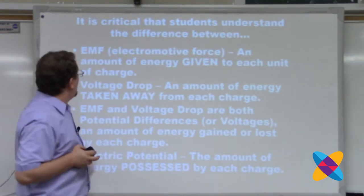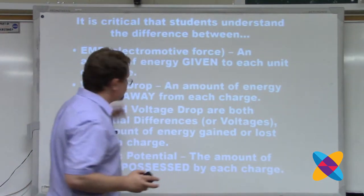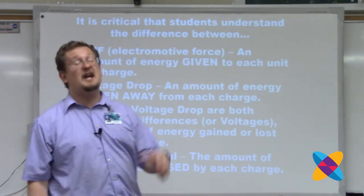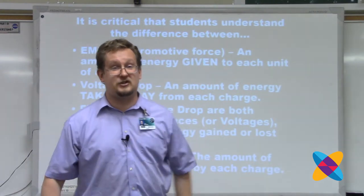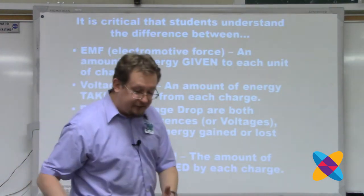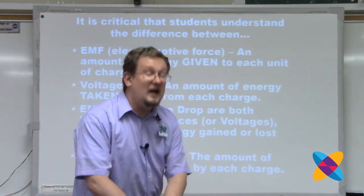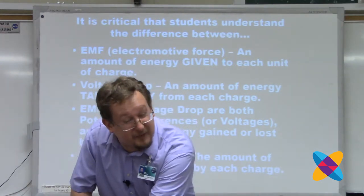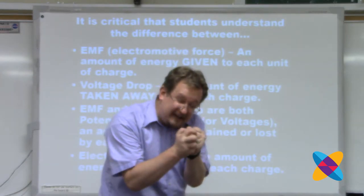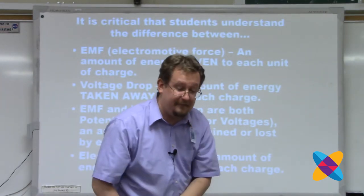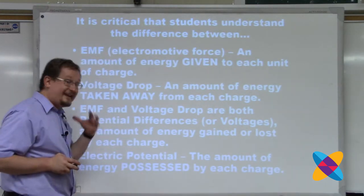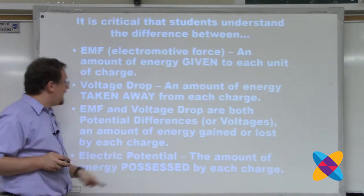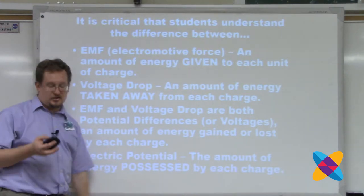What is electric potential? EMF is the energy given to each charge; voltage drop is the energy taken away from each charge. But electric potential is the amount of energy owned or possessed by each charge. Like the pizza delivery guy who receives pizzas at the drive-through and carries them to each house — the charges carry energy with them around the wires of the circuit. The charges get energy, hold on to it, drop it off, and come back for more.